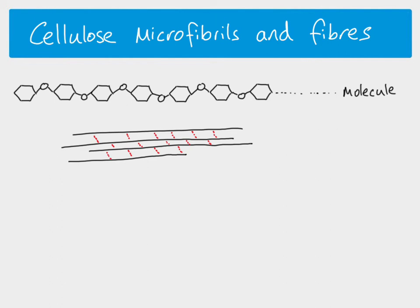When you have 60 to 70 molecules arranged like this with hydrogen bonding in between, we call it a microfibril. Hydrogen bonds are individually very weak, but because there are so many of them along the entire length of each chain, the combined strength is very high. This makes our cellulose microfibrils very, very strong.